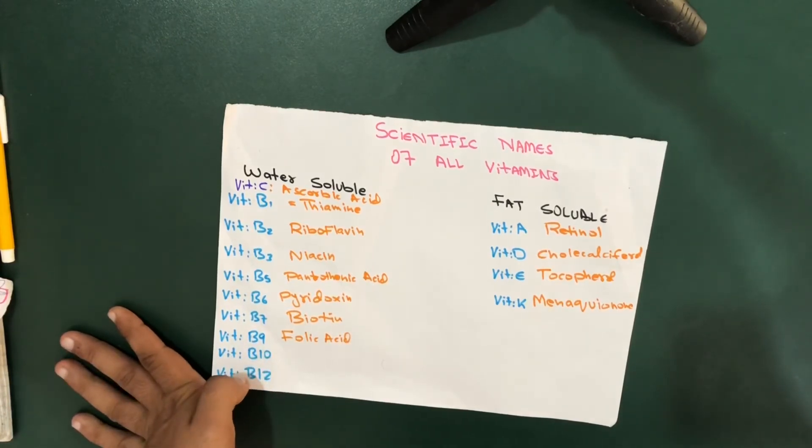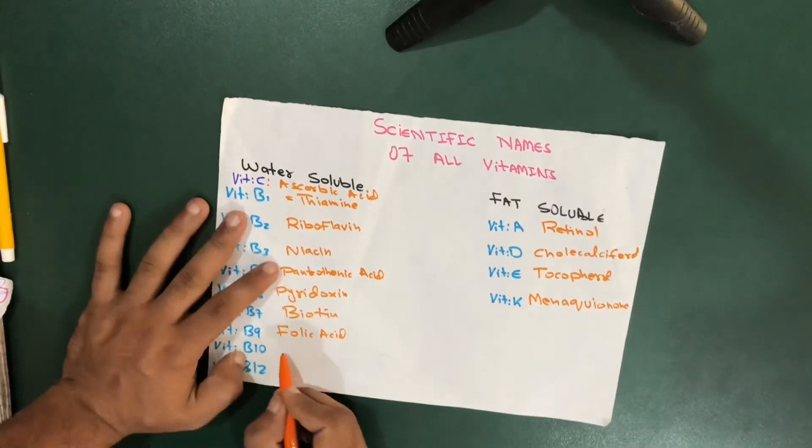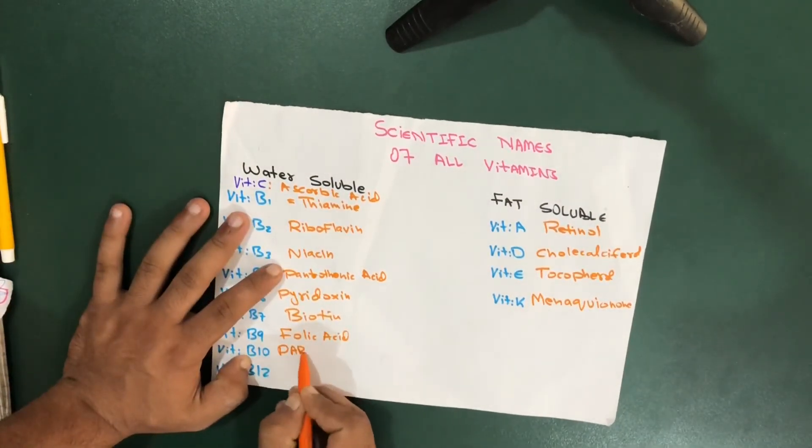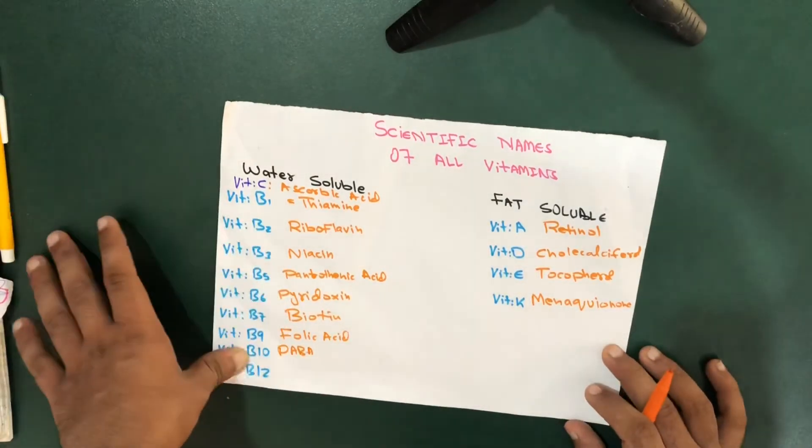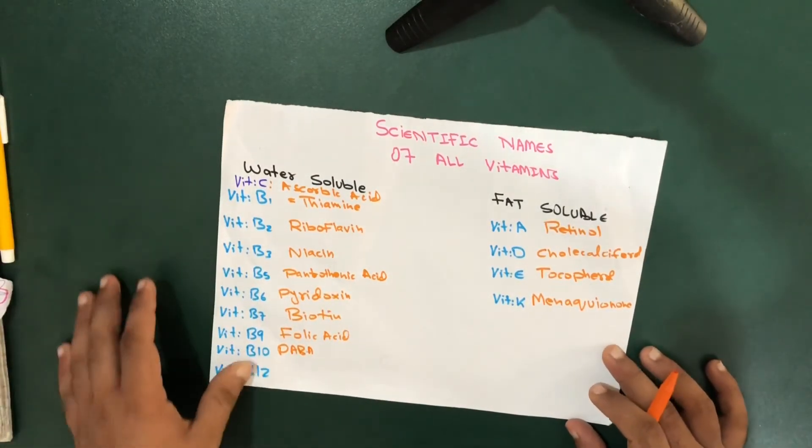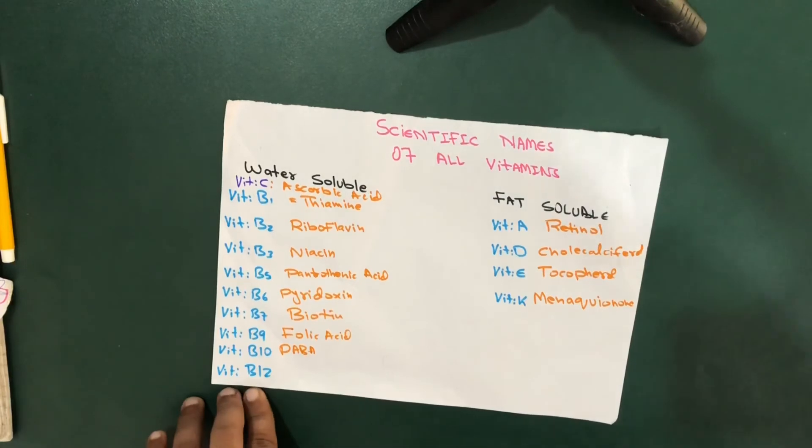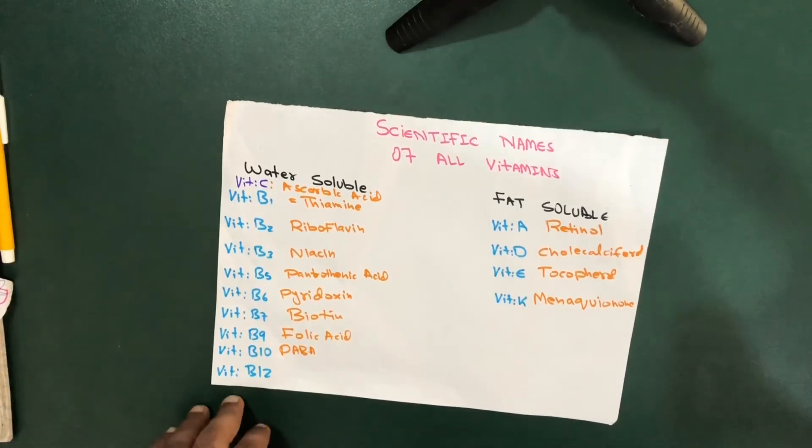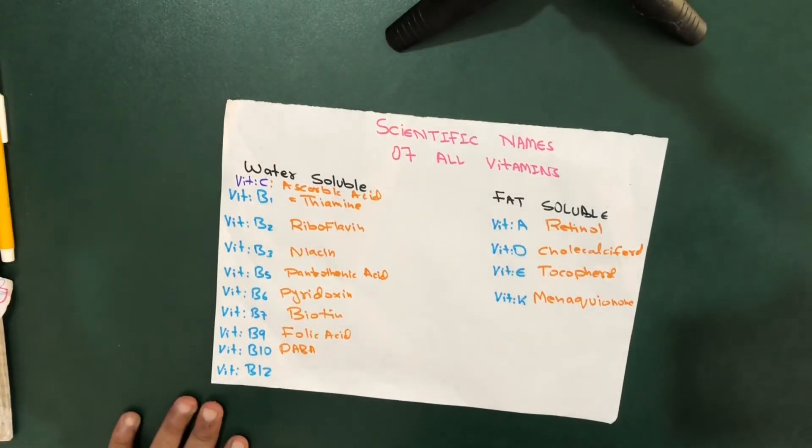For vitamin B10 we have PABA, P-A-B-A, which stands for para-amino benzoic acid. And for vitamin B10 we have the well-known vitamin called cyanocobamine.